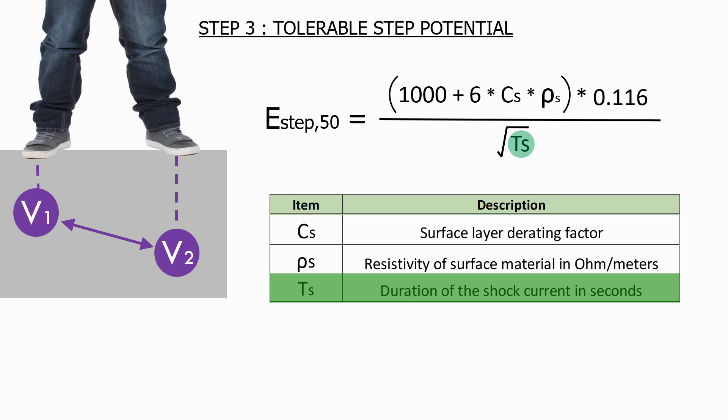But as usual, we take the worst case scenario, and we normally use a Ts value of one second, which gives us an error margin in case one of the protection systems fails.